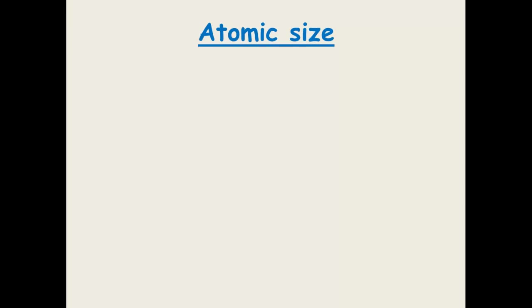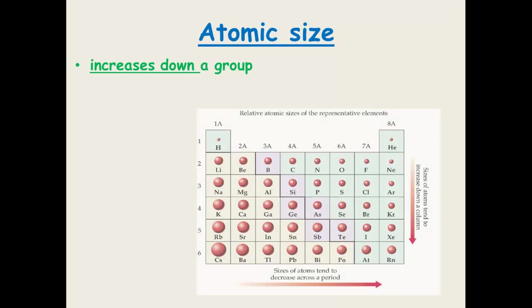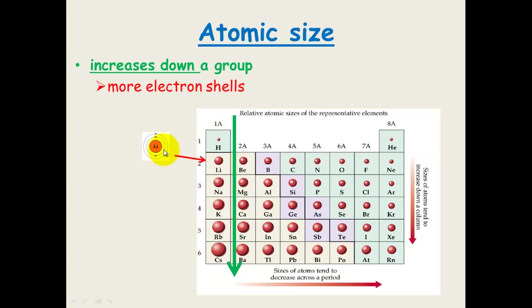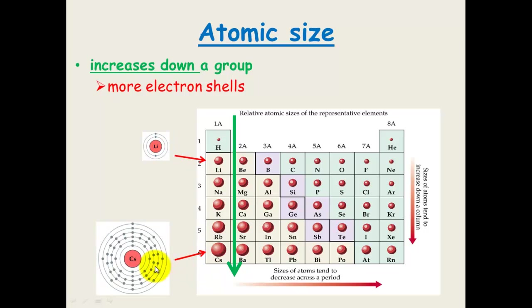Trends in the periodic table. Atomic size increases as you go down a group, and this makes perfect sense because as you go down a group there are more electron shells. Lithium has two shells, whereas cesium has six shells because it's in period six — so it's going to be a bigger size because there are more shells.